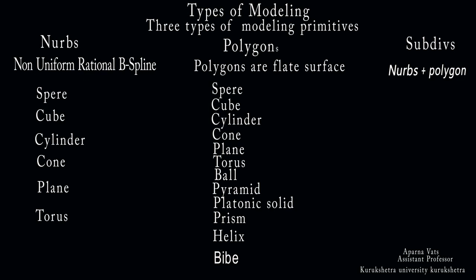Maya includes three primary types of primitives: NURBS, polygons, and subdivisions — each making them appropriate for different types of modeling. NURBS primitives include eight primitives: sphere, cube, cylinder, cone, plane, torus, circle, and square. The first six are NURBS surfaces, while circle and square are NURBS curves, which can be used when you want to construct surfaces yourself.